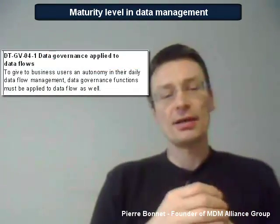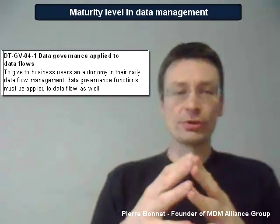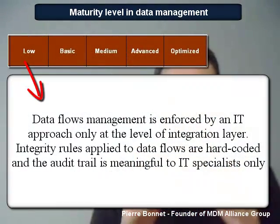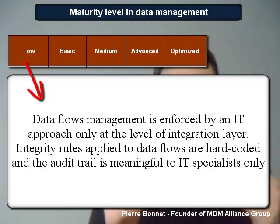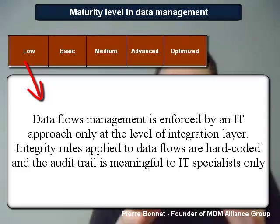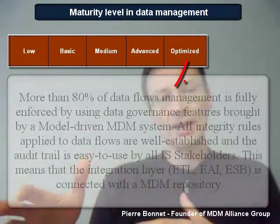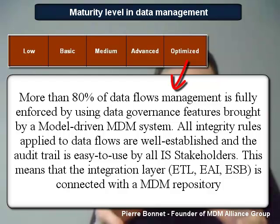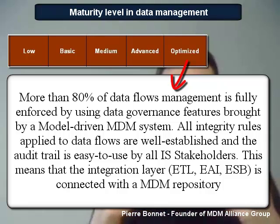Now let's take a last example of a measurement point applied to the governance features available to govern data flows. The low level is indicated as follows: data flows management is enforced by an IT approach only at the level of the integration layer, integrity rules applied to data flows are hard-coded, and the audit trail is meaningful to IT specialists only. On the opposite of the scale, the optimized level is: more than 80% of data flows management is fully enforced by using data governance features brought by an MDM system, all integrity rules applied to data flows are well established, and the audit trail is easy to use by all IS stakeholders.